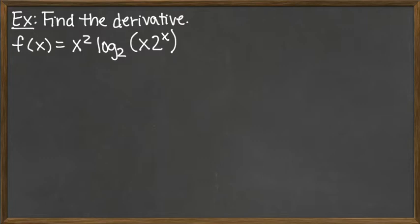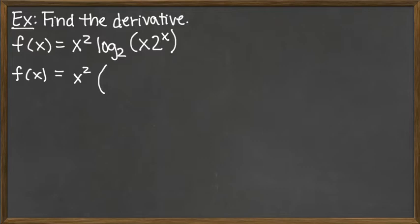Algebra does help us here because we have the log base 2 of a product. Anytime we have the logarithm of a product, we can use algebra to split that product into the sum of the logarithms. So f of x equals x squared out front — with parentheses because we're splitting the log base 2 of the product — giving us log base 2 of x plus log base 2 of 2 to the x.